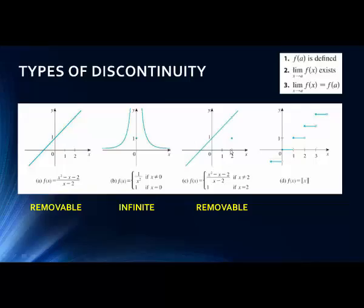Here we have another example of a removable discontinuity. We have a hole, and although the value is defined for f(2), it doesn't fill in the hole. We'd have to change the definition to remove the discontinuity by giving a definition that would fill in the hole. The last type is when the function jumps from one value to another — that's literally called a jump discontinuity.